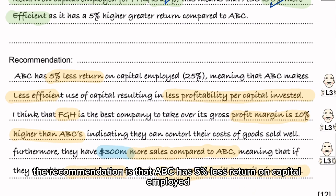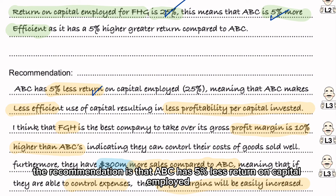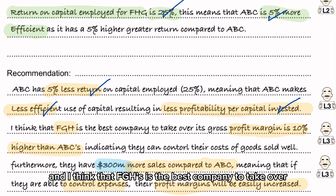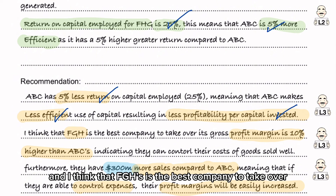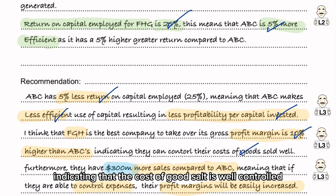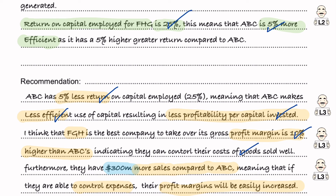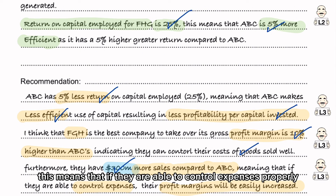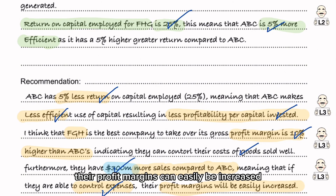The recommendation is that ABC has 5% less return on capital employed, meaning that they are less efficient, thus less profitable. FGH is the best company to take over as their gross profit margin is 10% higher than ABC's, indicating that their cost of goods sold is well controlled. Also, they have $300 million more in sales compared to ABC, meaning that if they are able to control expenses properly, their profit margins can easily be increased.